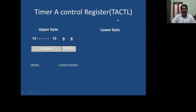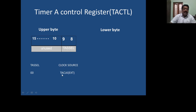Timer A has a control register. By entering values into this register, you can program Timer A as desired. It is a 16-bit register with upper and lower bytes. In the upper byte, only bits 8 and 9 are used — called the Timer A source selection bits — while bits 10 to 15 are unused. The combinations are: 00 selects the Timer A clock input; 01 selects the auxiliary clock; 10 selects the subsystem master clock in the megahertz range; and 11 selects an external clock, same as the first option.